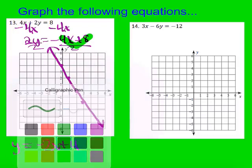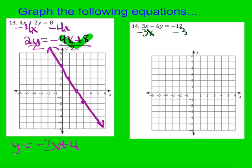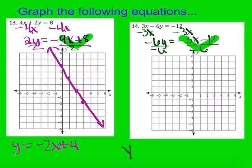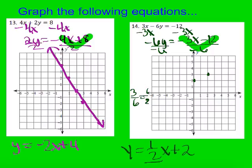Same thing on number 14. I start by subtracting 3X from both sides, getting negative 6Y equals negative 3X minus 12. Then I divide both sides by negative 6. Negative 3 over negative 6 — the negatives cancel and I reduce 3 over 6 to 1 half. Negative 12 divided by negative 6 gives positive 2. So I'm crossing the Y axis at 2 and going up 1 over 2 repeatedly, since my slope is 1 half.